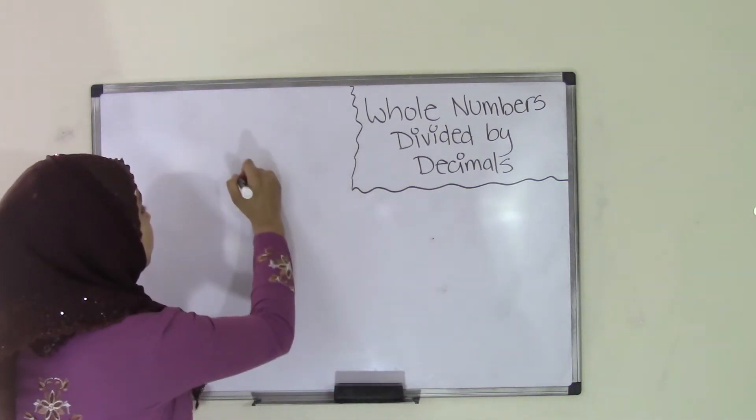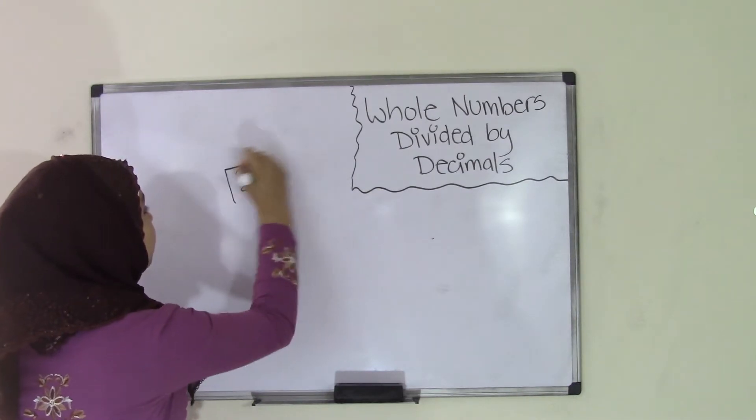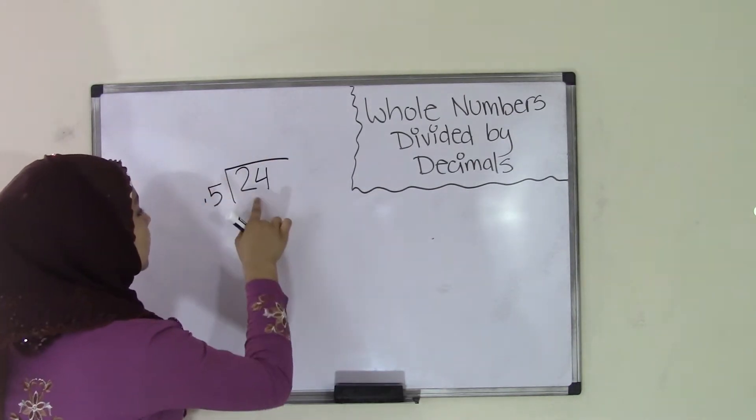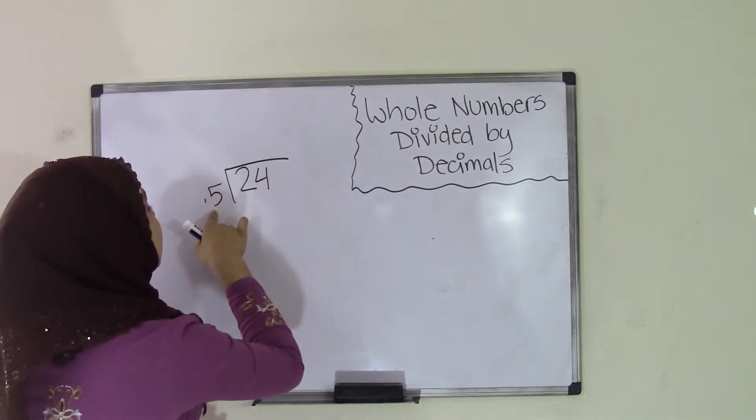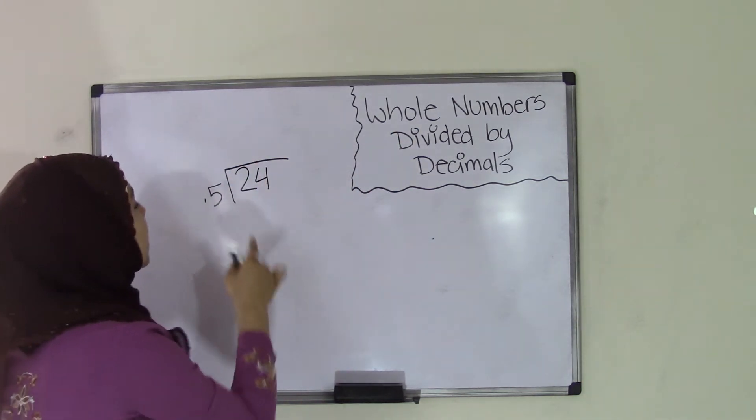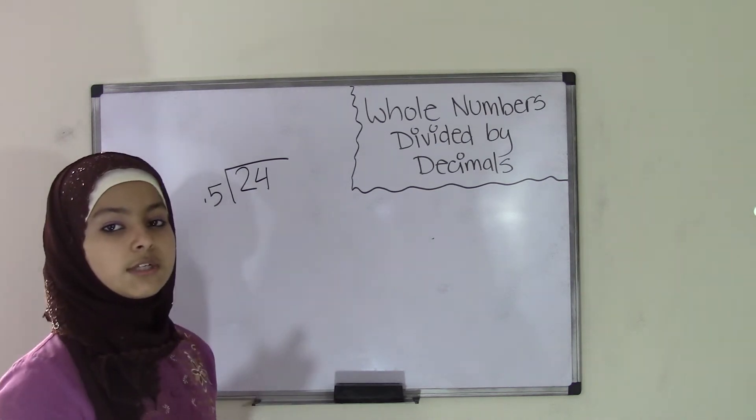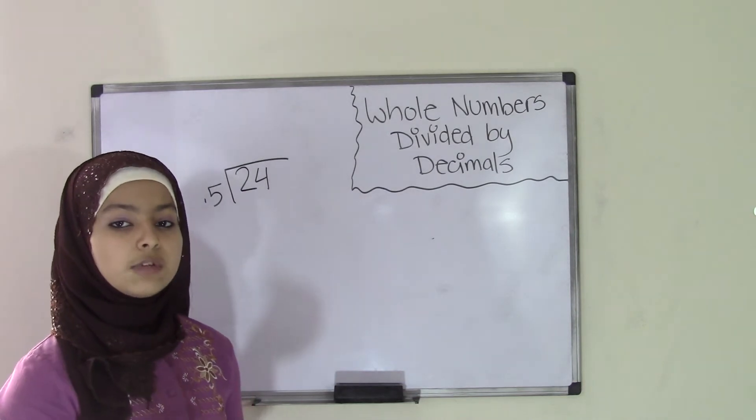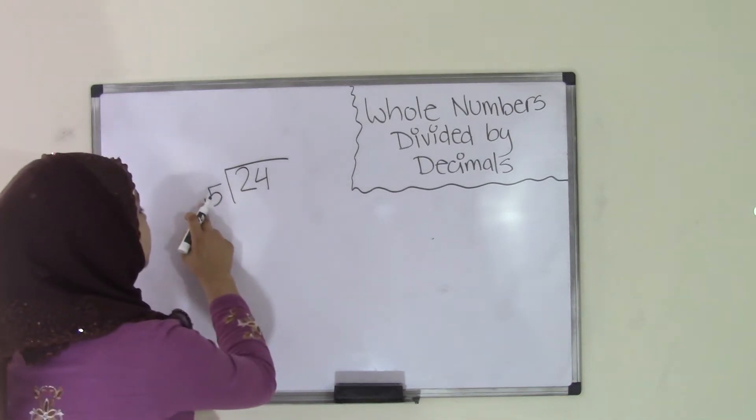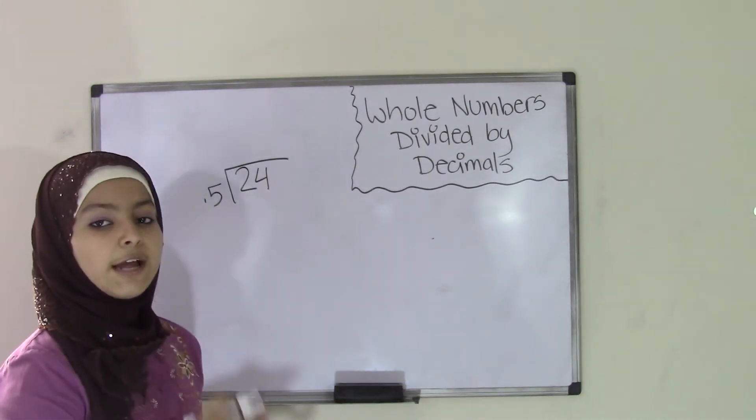So today I'm going to be using the problem 24 divided by 0.5. 24 is our dividend, which is a whole number, and our divisor is a decimal, which is 0.5. Now in order to do this, first we need to convert our divisor, which is 0.5, into a whole number. And how we can do that is by moving the decimal point in this number from left to right.